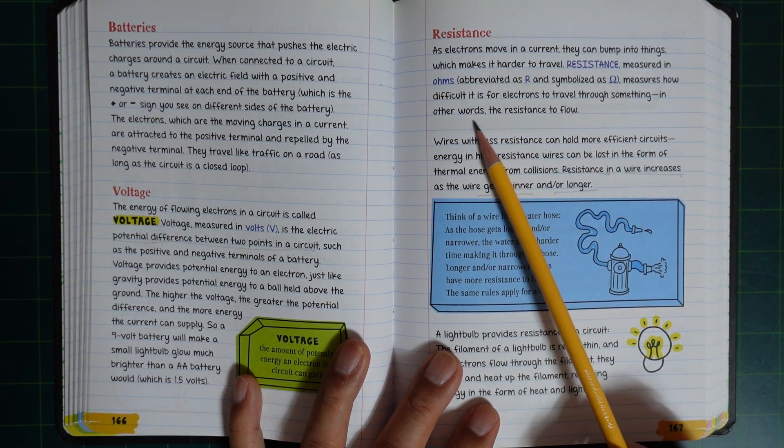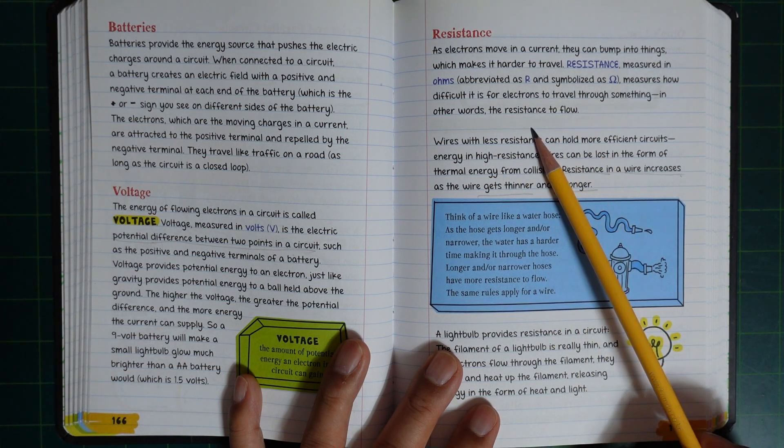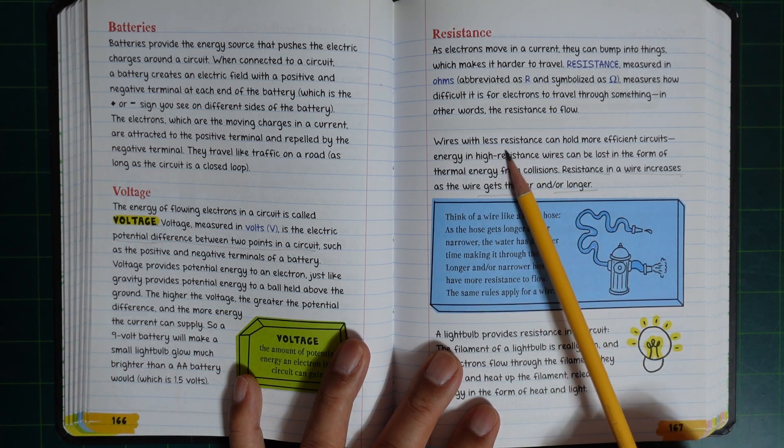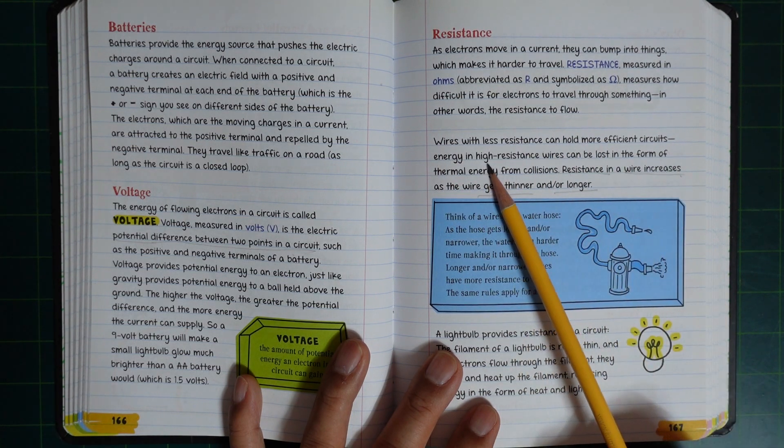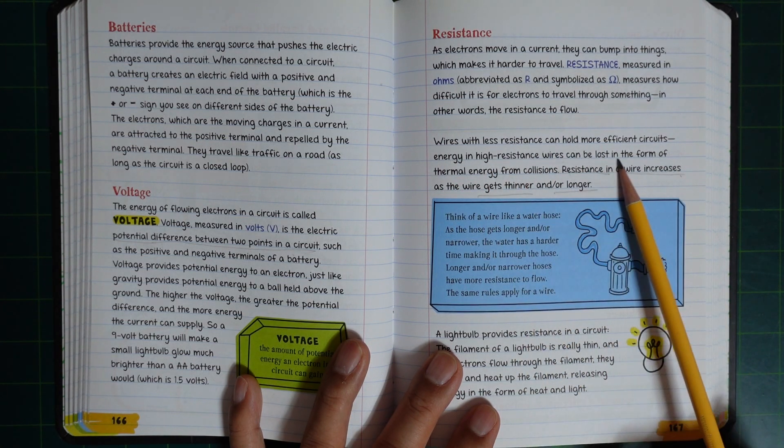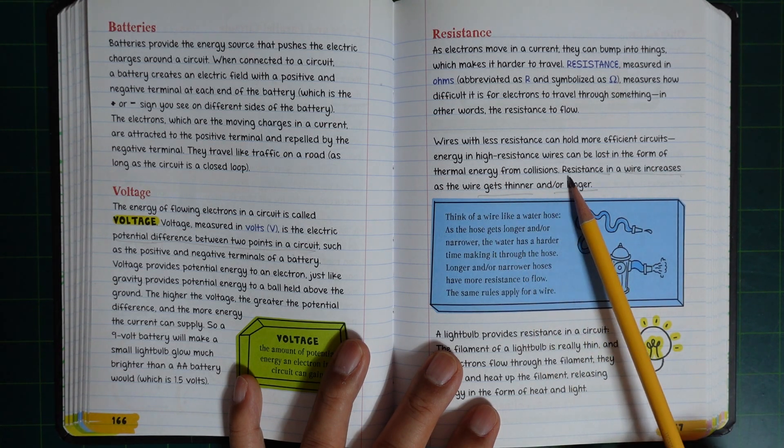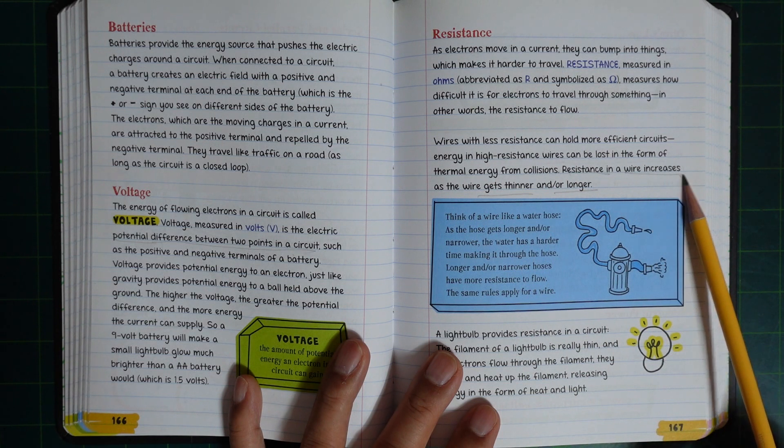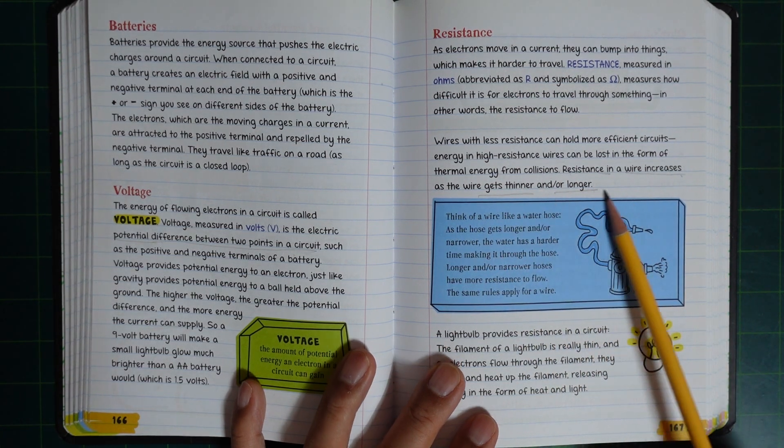In other words, the resistance to flow. Wires with less resistance can hold more efficient circuits. Energy in high resistance wires can be lost in the form of thermal energy from collisions. Resistance in a wire increases as the wire gets thinner and/or longer.